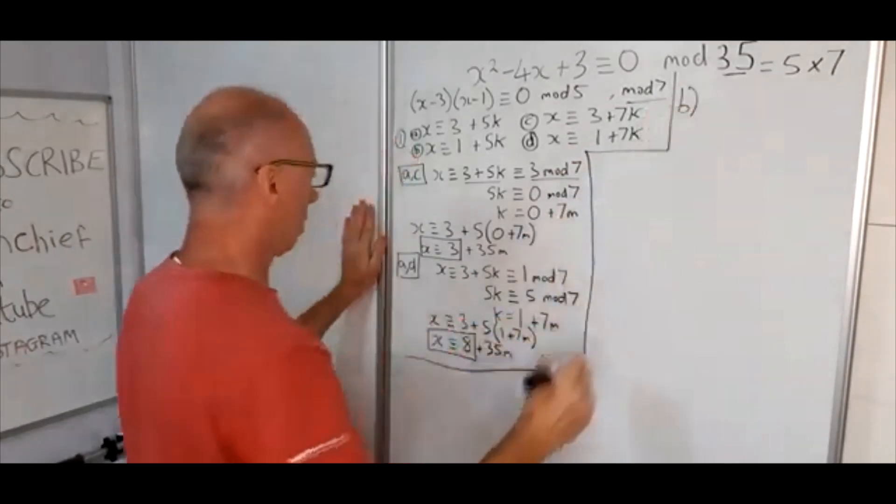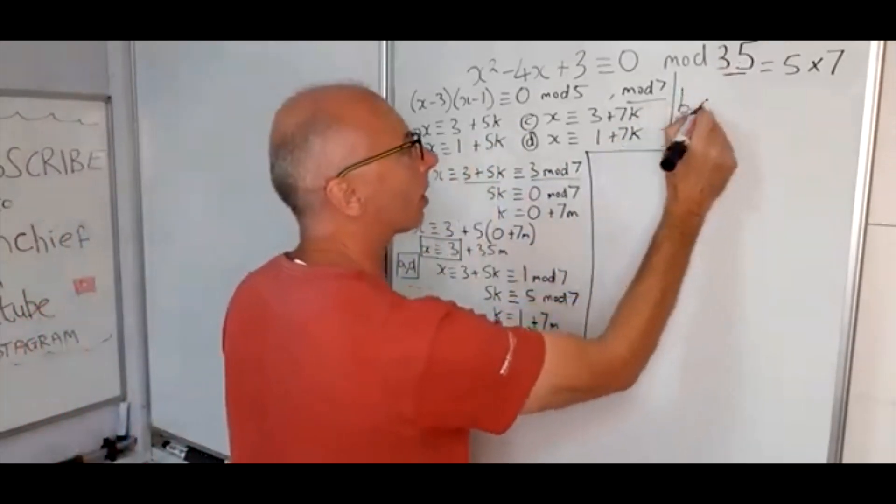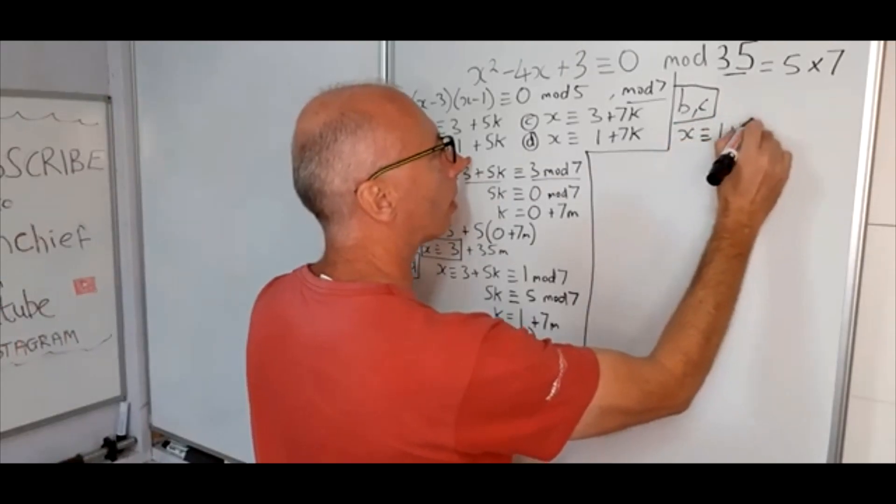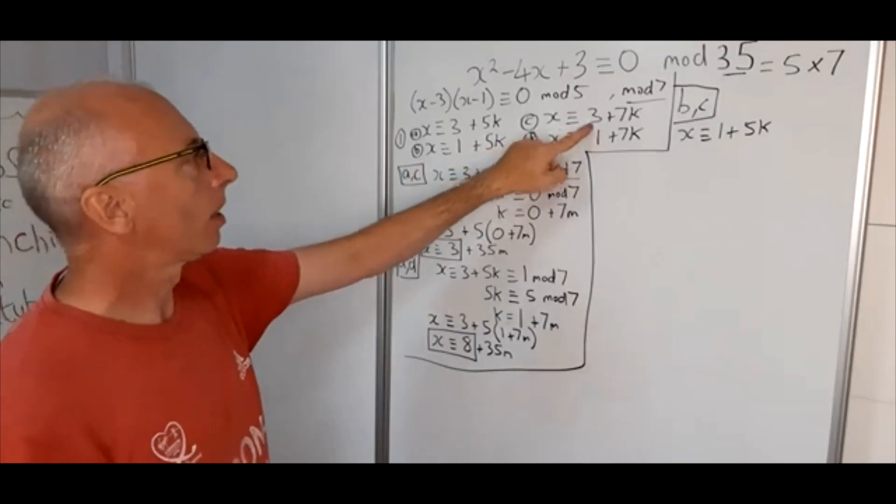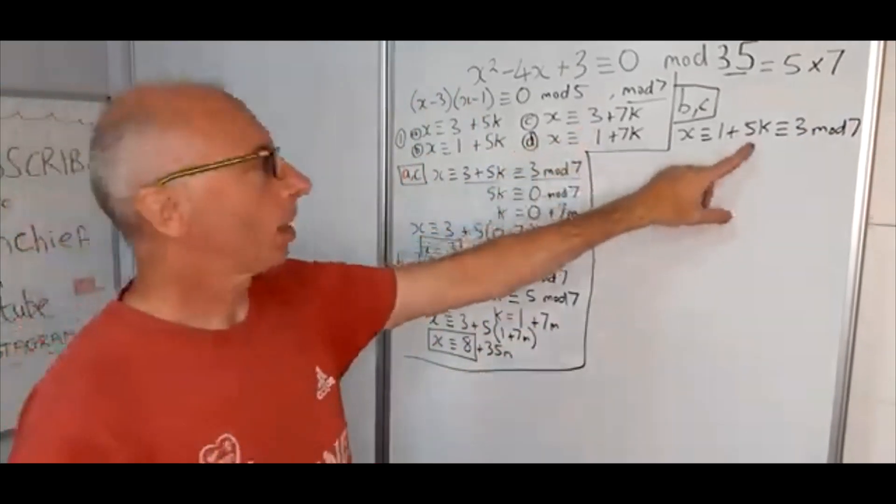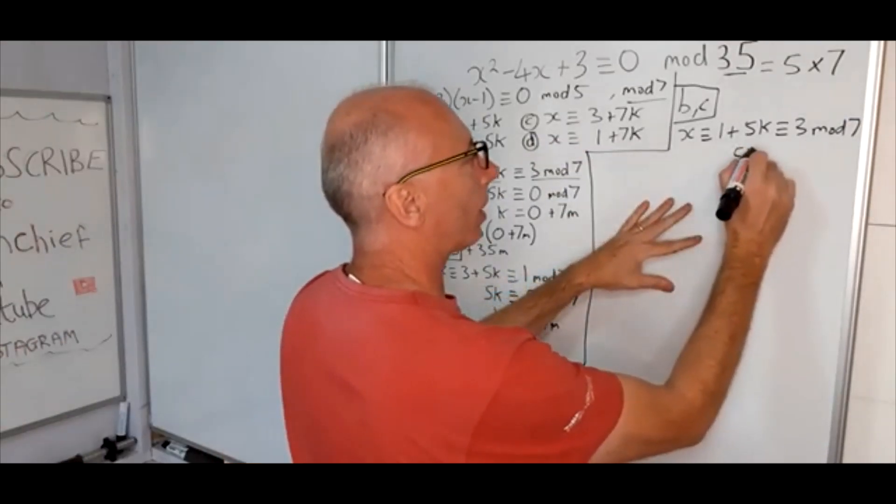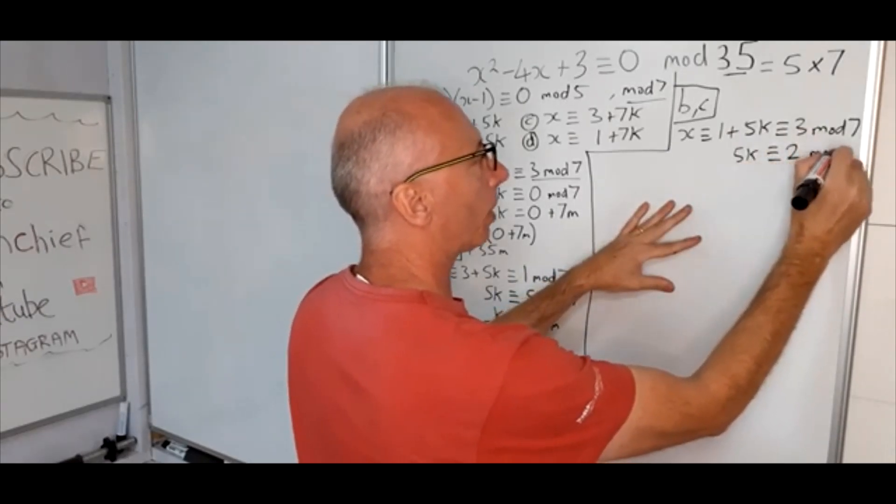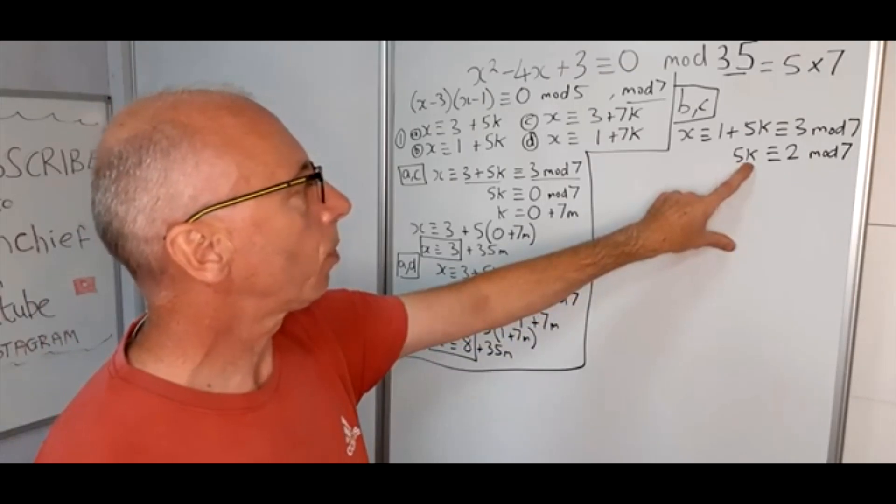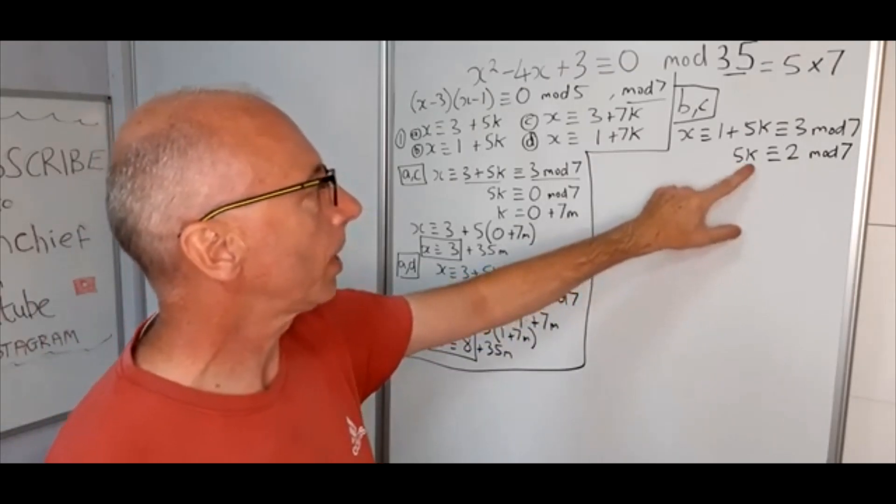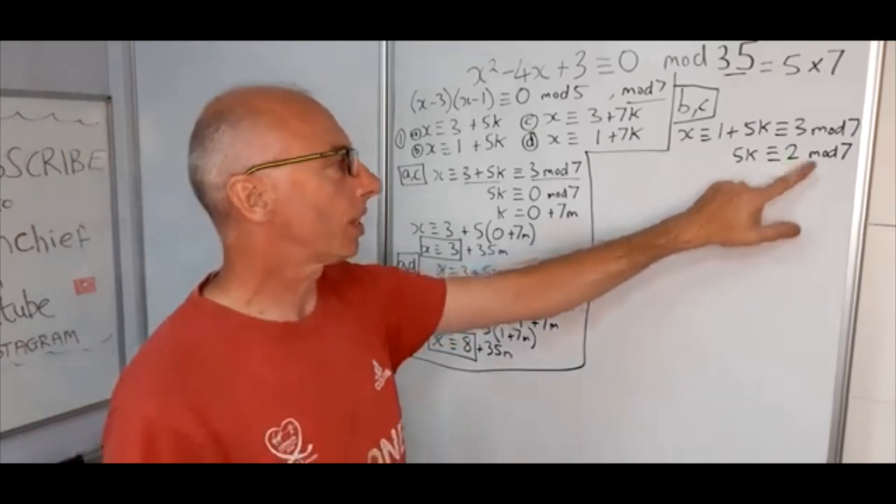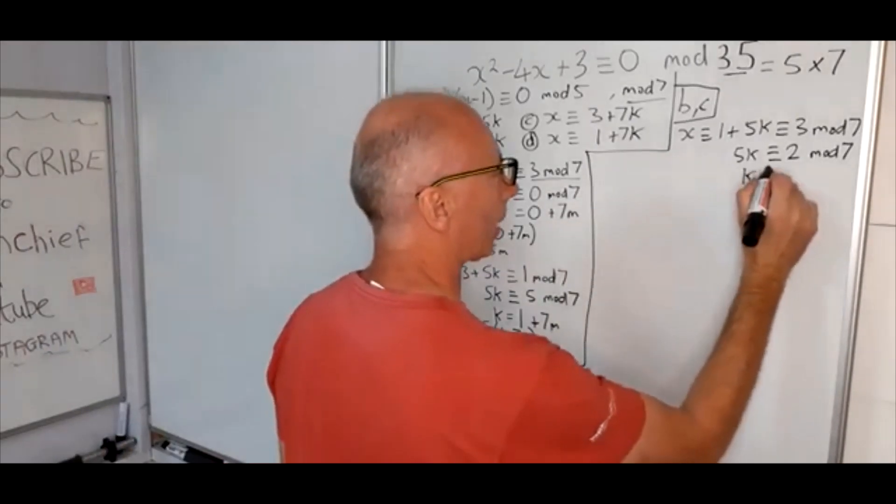So B and C, x is congruent with 1 plus 5k, and then that is congruent with 3 mod 7. Let's try and get the k on its own now. So now we've got 5k is congruent to 2 mod 7. So now we need a value for k. 5 times 1 is not congruent with 2 mod 7, 2 is 10, 15, 20, 25, 30. 30 is congruent with 2 mod 7, so 5 times 6 is 30, therefore we can have k equals 6.